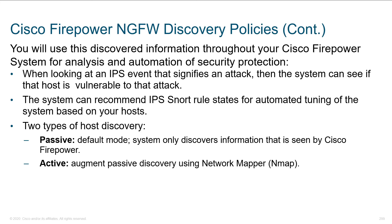You'll use this discovered information throughout your Firepower system for analysis and automation of security protection. When looking for an IPS event that signifies an attack, we can determine — they used to call this the attack relevancy rating, which I thought was a really good term for it — whether the host would actually be vulnerable. So we jump out and go, oh my gosh, it's an attack, it's directory traversal against IIS version 2. And it's like, well, we're not using IIS version 2, it wouldn't even work here. Where once upon a time, the signatures were so simple they couldn't think in terms of that context.